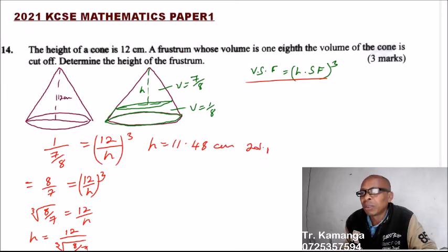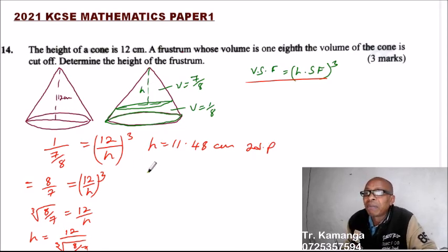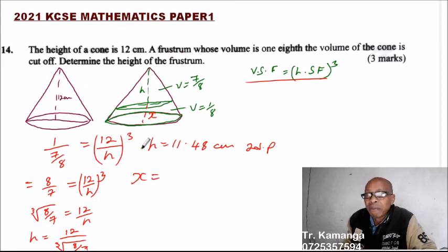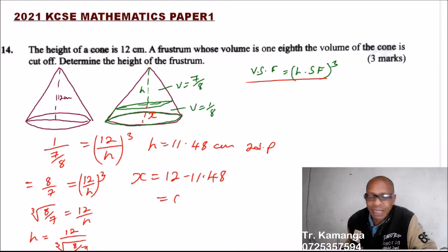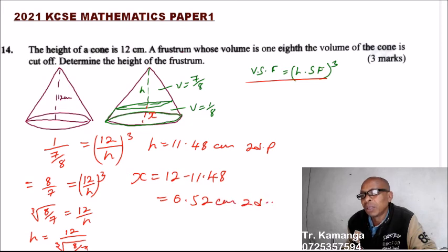So to two decimal places the small cone height is 11.48 cm. Therefore, the height of the frustum is x, where x equals the full height minus 11.48, which gives 0.52 cm to two decimal places.